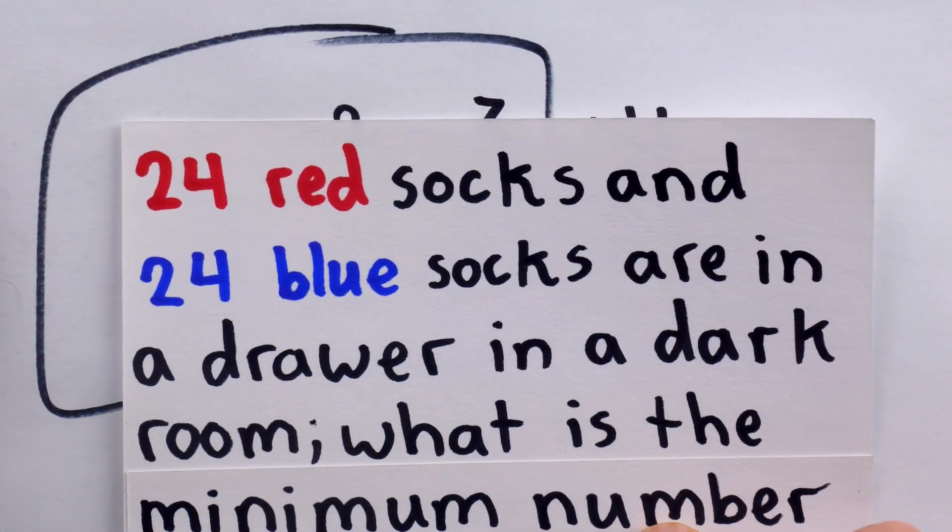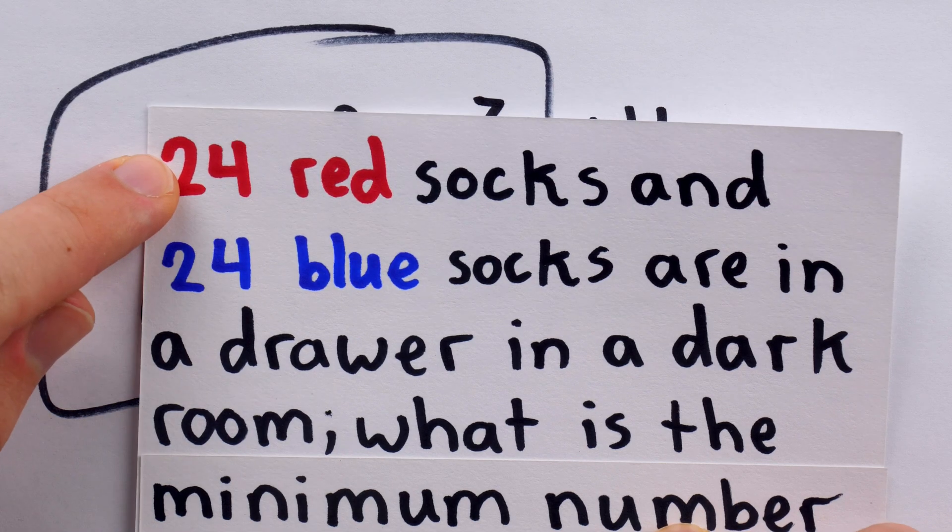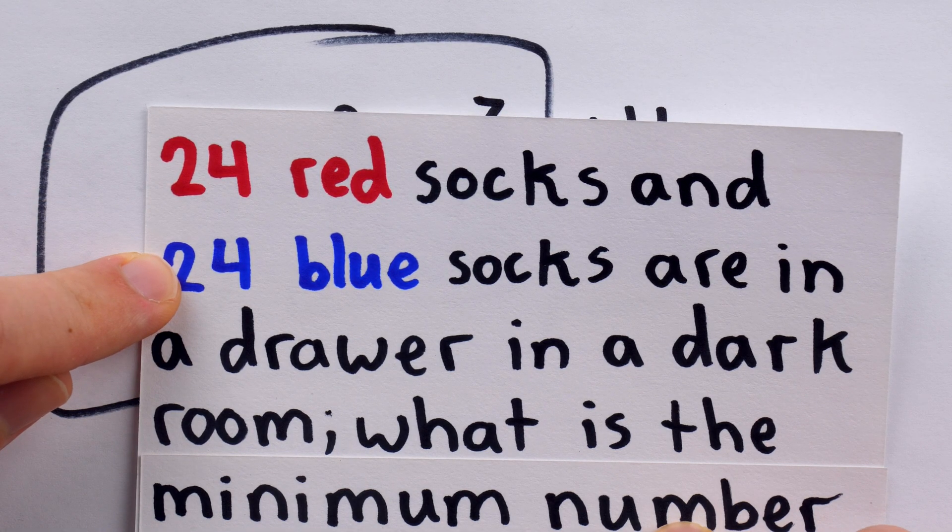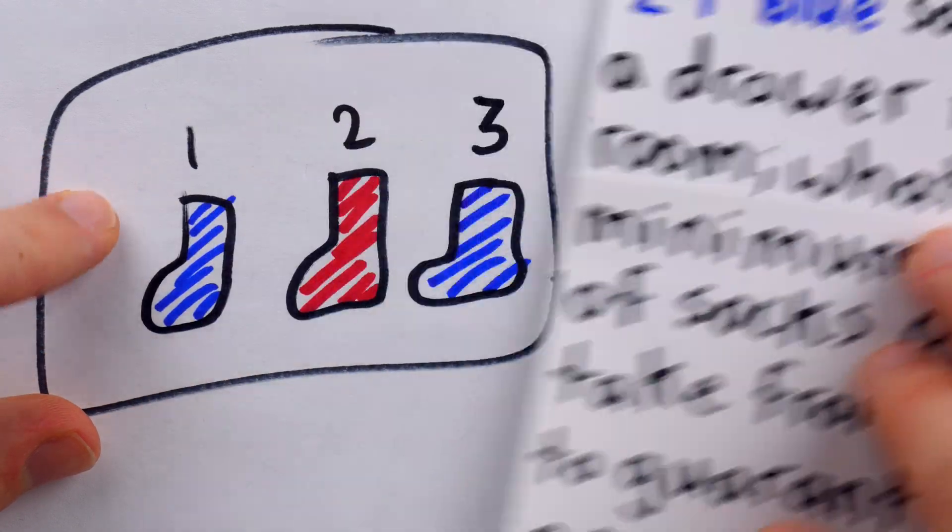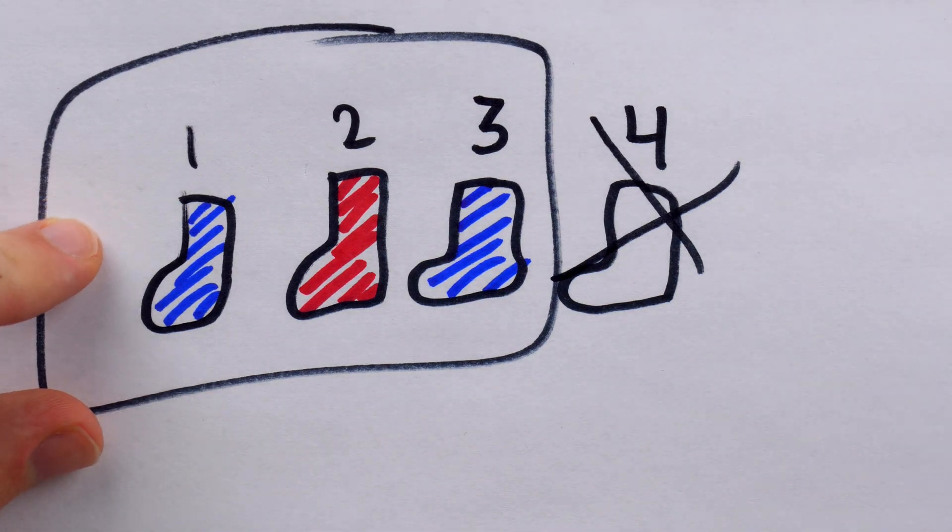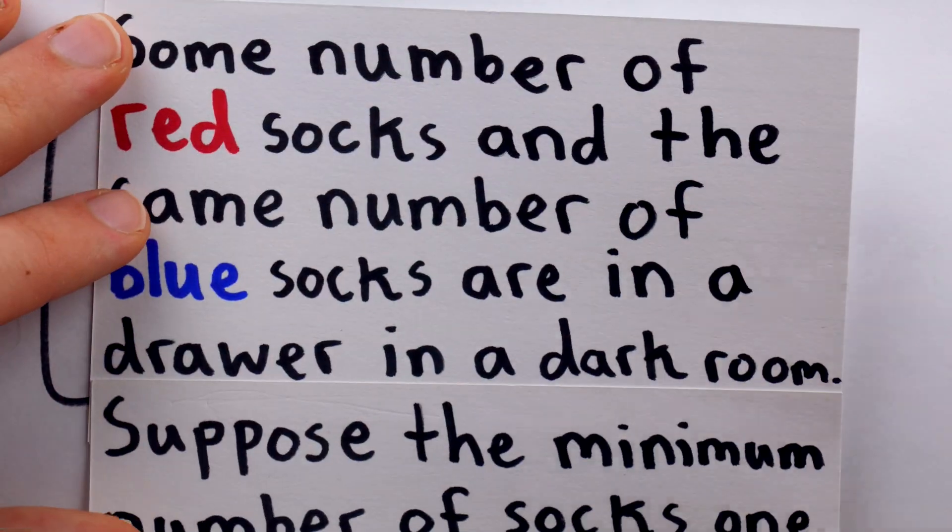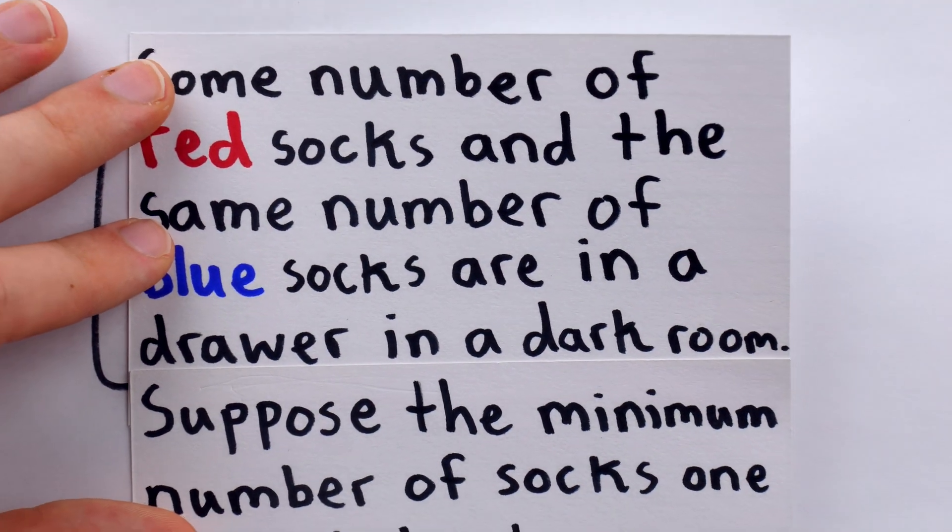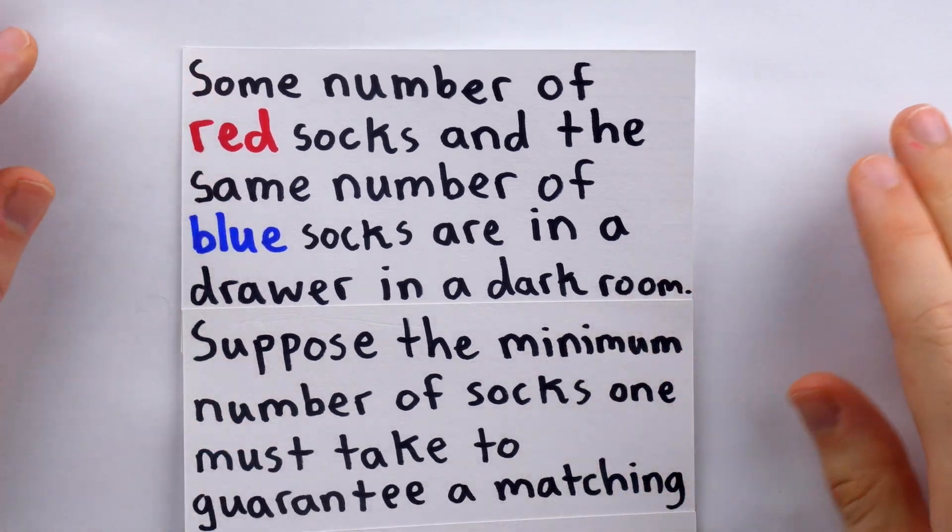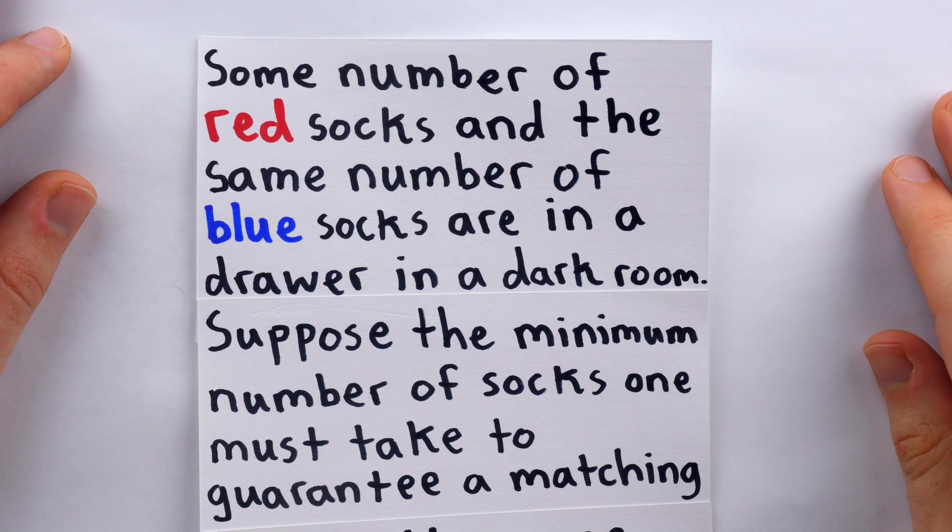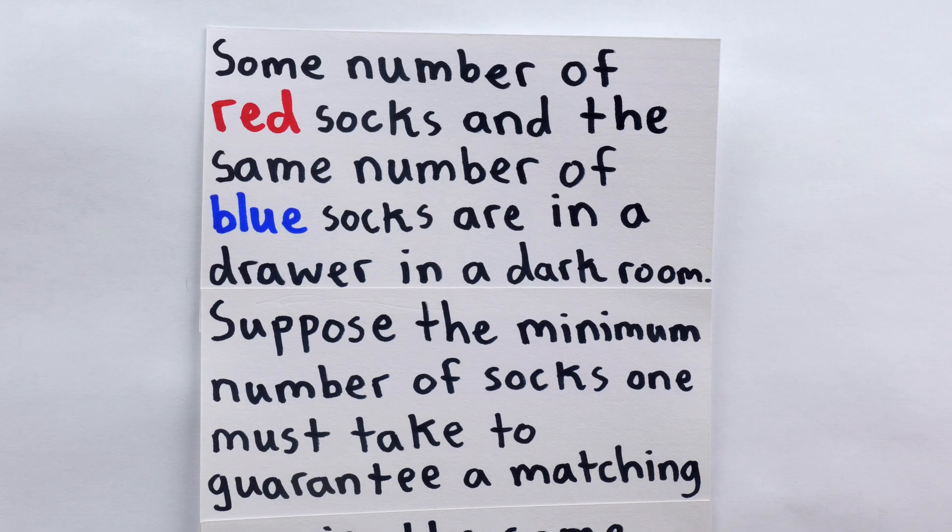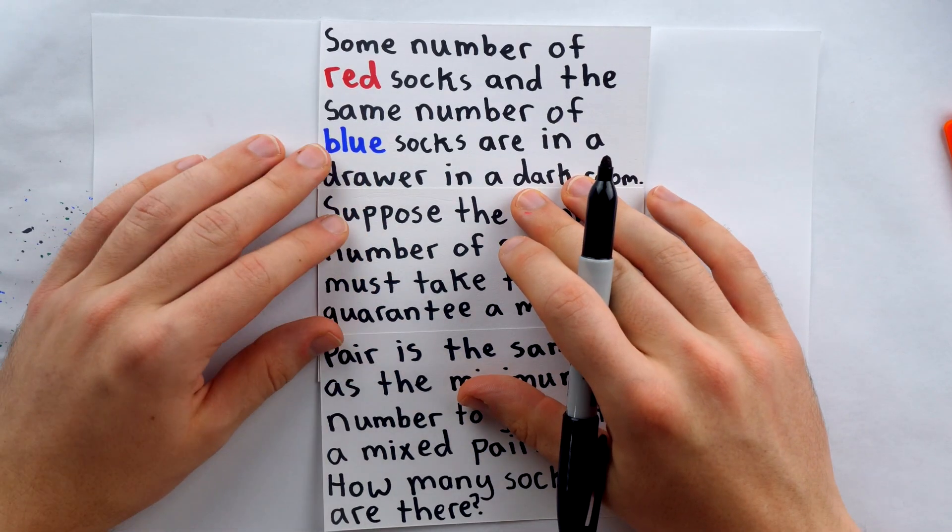Now, notice we were told for this simple problem the number of red socks and the number of blue socks, though it was completely irrelevant to our solution, which is good because in the problem we began with, the harder problem, we were not told the specific numbers of red socks or blue socks, only that the numbers are the same. So, returning to this harder problem...